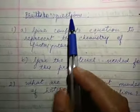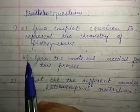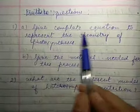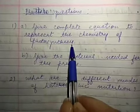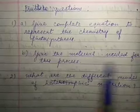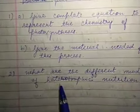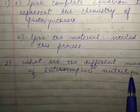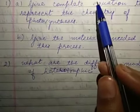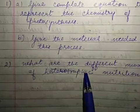Here I have given some practice questions related to the topic that I have covered today. The first question that is given in two parts. First part: give complete equation to represent the chemistry of photosynthesis. Second part: give the material needed for this process. The second question is: what are the different modes of heterotrophic nutrition. Next topic, we will continue the remaining part of this topic in the next lectures. Thank you everyone.